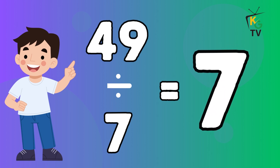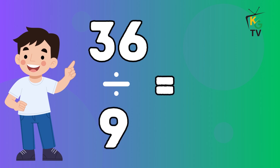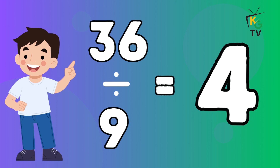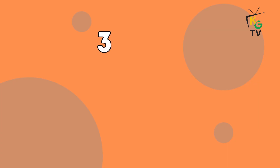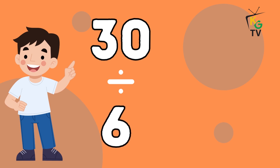36 divided by 9 is equal to 4. 30 divided by 6 is equal to 5.